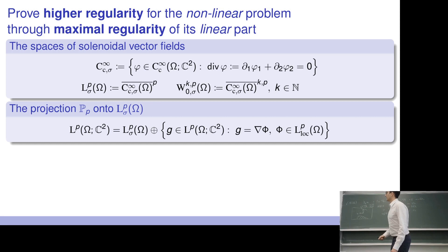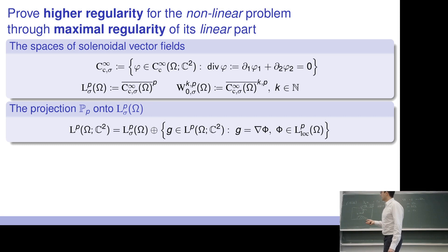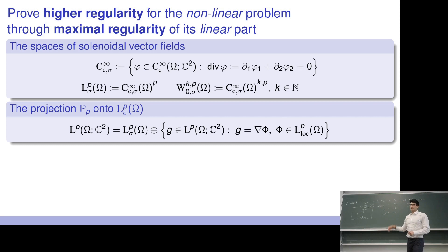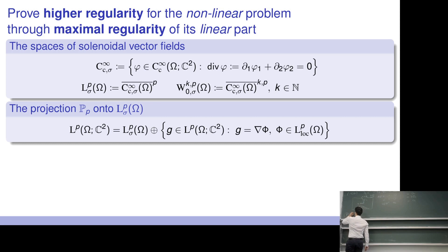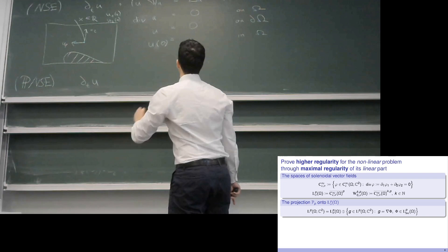These spaces are where we look for solutions. They have a nice additional property: for certain values of p, the space Lp sigma is actually complemented in the Banach space by a space made up of vector fields stemming from an Lp function — this is precisely where the pressure also comes from. This allows us to apply a projection — the Helmholtz projection — to the system of equations, giving us the projected Navier-Stokes equation.